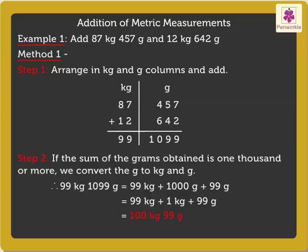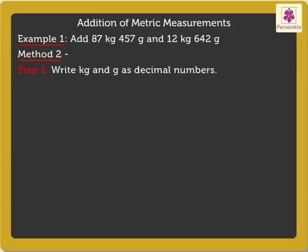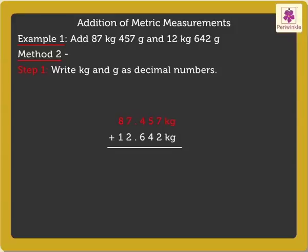Alternatively, we can use method 2. Step 1: Write the kilograms and grams as decimal numbers. Thus, we get 87.457 kilograms and 12.642 kilograms.